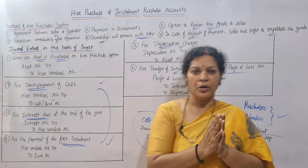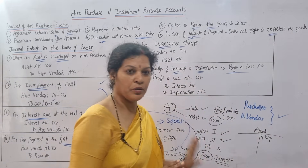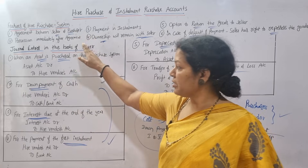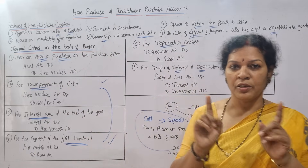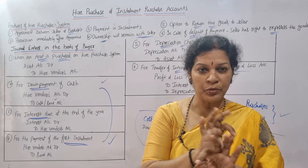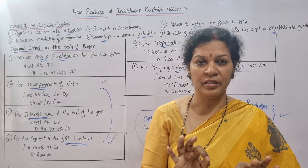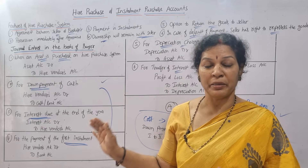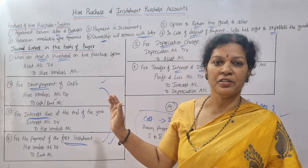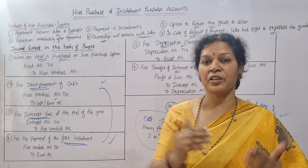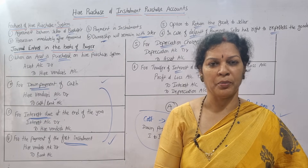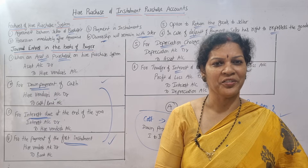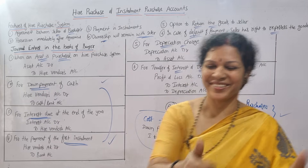So you have understood the basic concept, features, and the six journal entries of the Hire Purchase System. Write your notes clearly and try to memorize these entries. In the next class we will work out a short problem. Stay connected and don't forget to share these videos. Good luck!